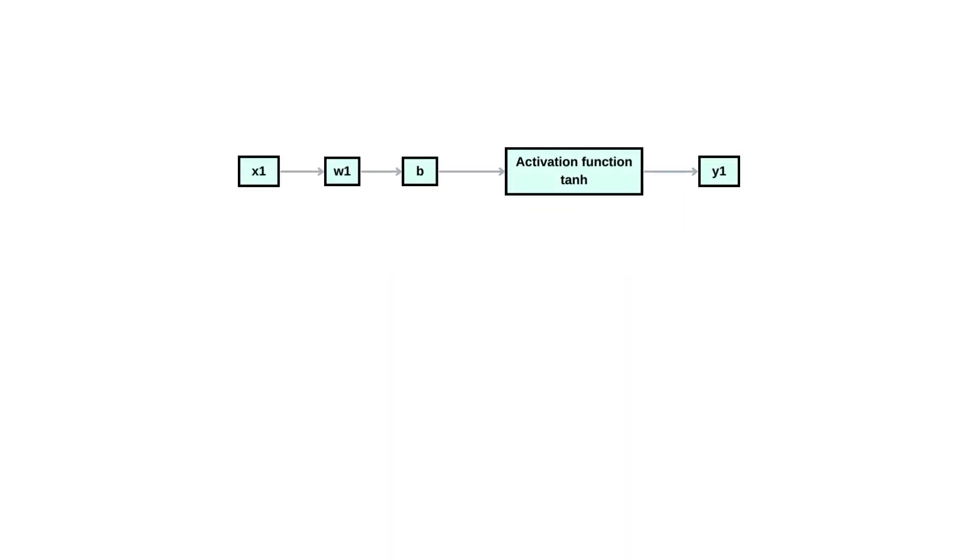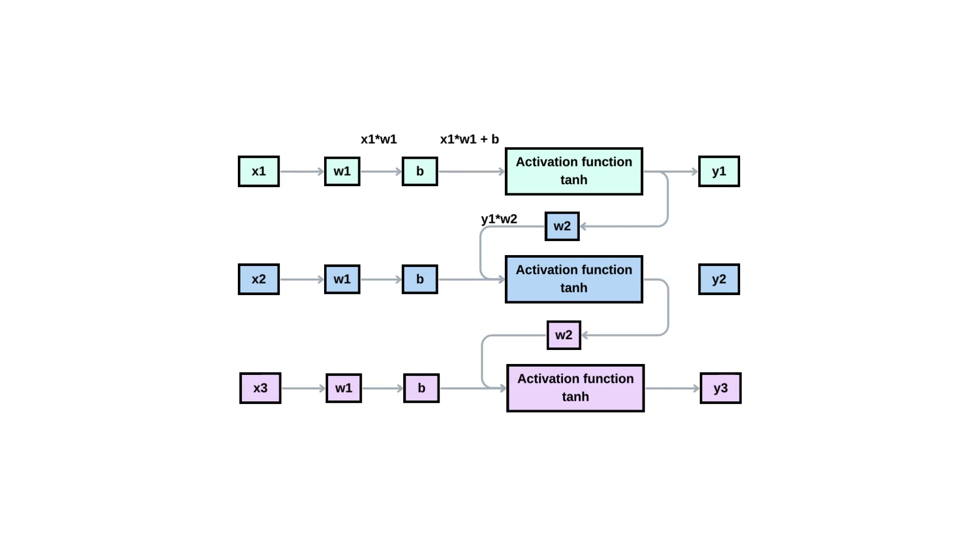This is how a simple neural network looks like, where input is multiplied with weight, a bias is added, and the value is given to activation function, which then produces an output. Now, in RNN, this output is then given as input to the next time step. Thus, it unfolds into this. Notice that the weights and biases remain same, and the previous output is multiplied by a weight. This then unfolds further to the time step we need.